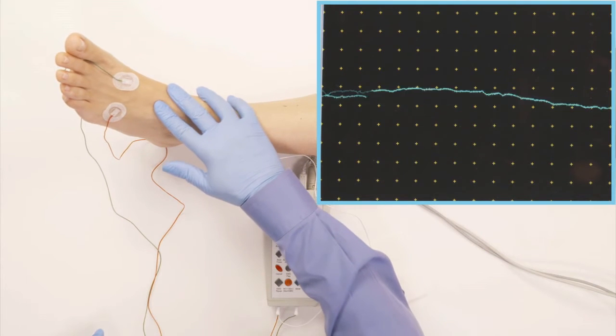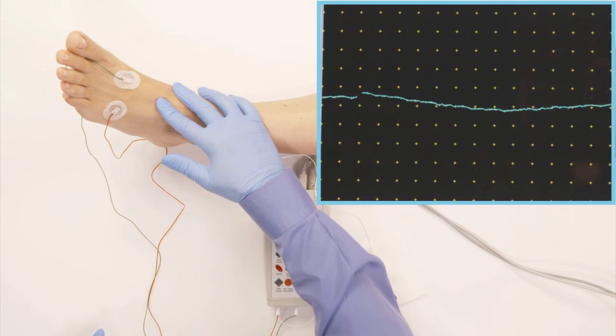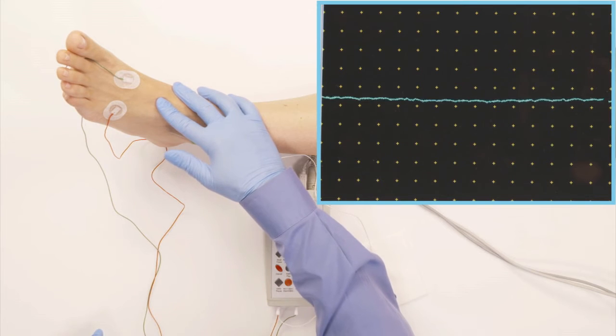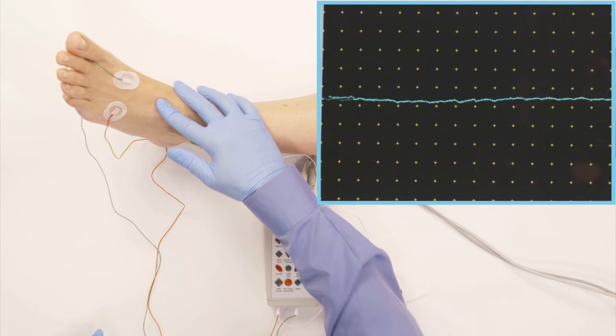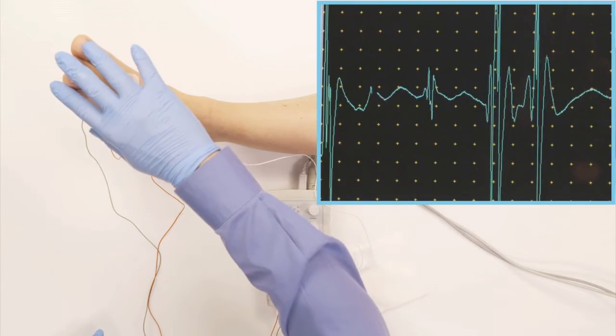And when I put my hand here, you can see that I'm also acting as an antenna, the artifact disappears. So now I'm going to ask her to start activating the muscles a little bit.